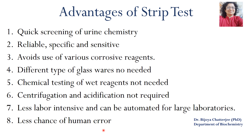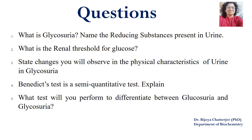Review questions: What is glycosuria? Name the reducing substances present in urine. What is the renal threshold for glucose? State the changes observed in physical characteristics of glucosuria. Why is Benedict's test a semi-quantitative test? What tests will you perform to differentiate between glucosuria and glycosuria?